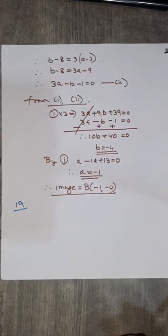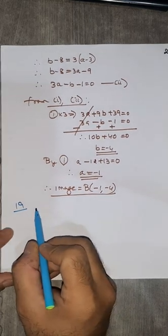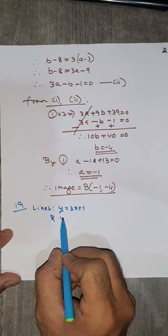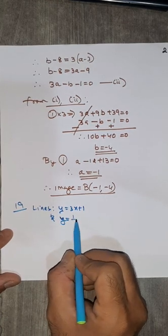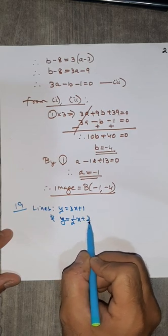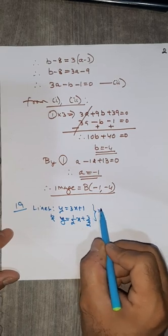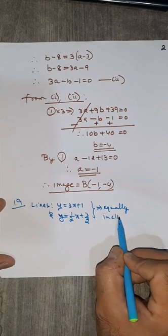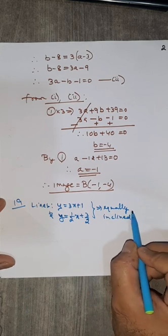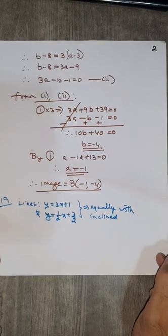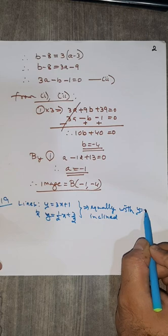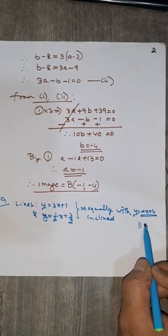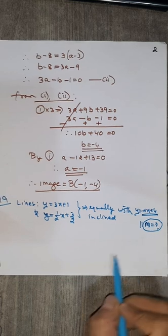Question number 19. You are given three lines: the first is y equals 3x plus 1, and the second, writing in slope-intercept form, is y equals (1/2)x plus 3/2. These two lines are equally inclined — they make equal angles — with the line y equals Mx plus 4. The question is to find the value of M, that is the slope of the third line.